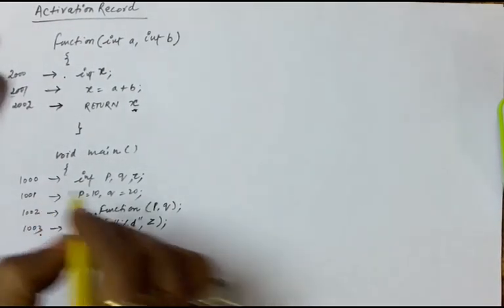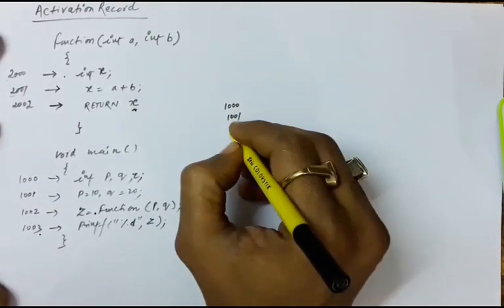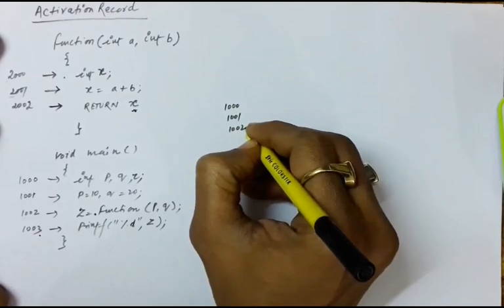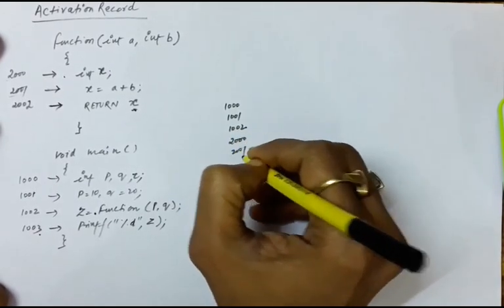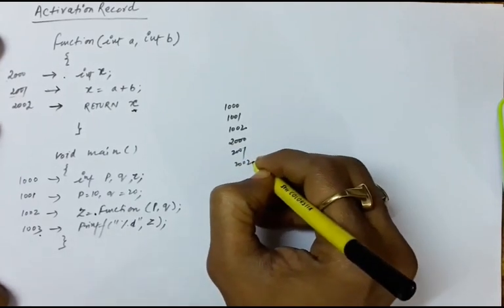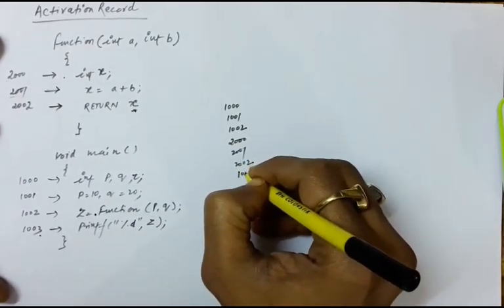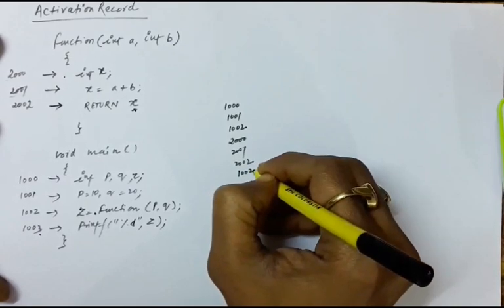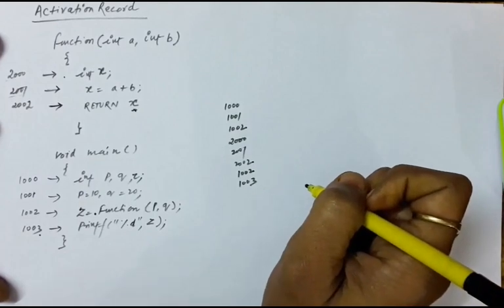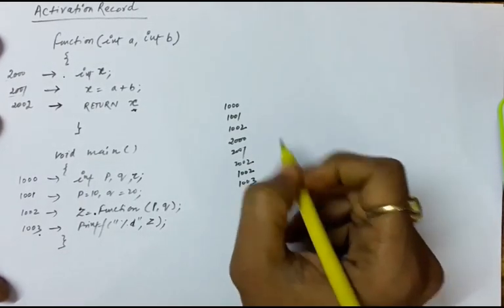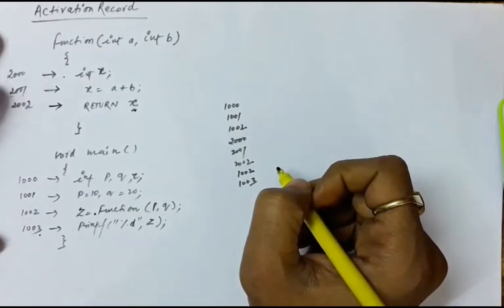The order of execution is: instruction 1000, then 1001, then 1002, then jumping to 2000, 2001, 2002, then coming back to 1002, and then 1003. This is the order of execution. The activation record helps us ensure that this order is followed.